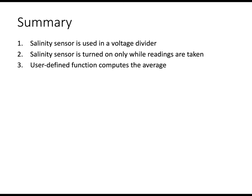So in summary, we have a salinity sensor that needs to be part of a voltage divider in order to work with an Arduino. The salinity sensor is turned on only while the readings are taking. And we've written a user-defined function that computes the average because there is some fluctuations in the readings.